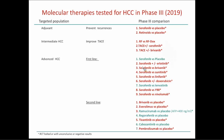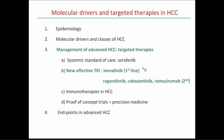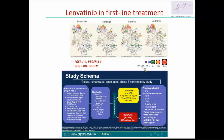After sorafenib, there have been sorafenib itself and four additional positive trials. All other trials in the adjuvant setting were negative. In frontline: sorafenib plus erlotinib negative, and all other drugs — brivanib, sunitinib, linifanib — were negative. Y-90 versus sorafenib: two negative trials. Recently, nivolumab in second line was negative. Regorafenib, cabozantinib, and ramucirumab were positive; the others were negative.